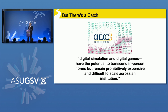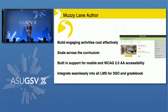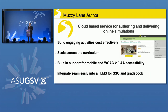We did some work under a Gates Foundation grant a couple of years ago, saw a lot of these same things, and really went out to build a platform to try to address those issues. The result of that was Muzzy Lane Author, which came out in 2015. It's basically a SaaS platform that allows non-technical people — SMEs and instructional designers — to build their own online simulations, build in feedback, build in auto-assessment, and then deploy those as part of their online courses.